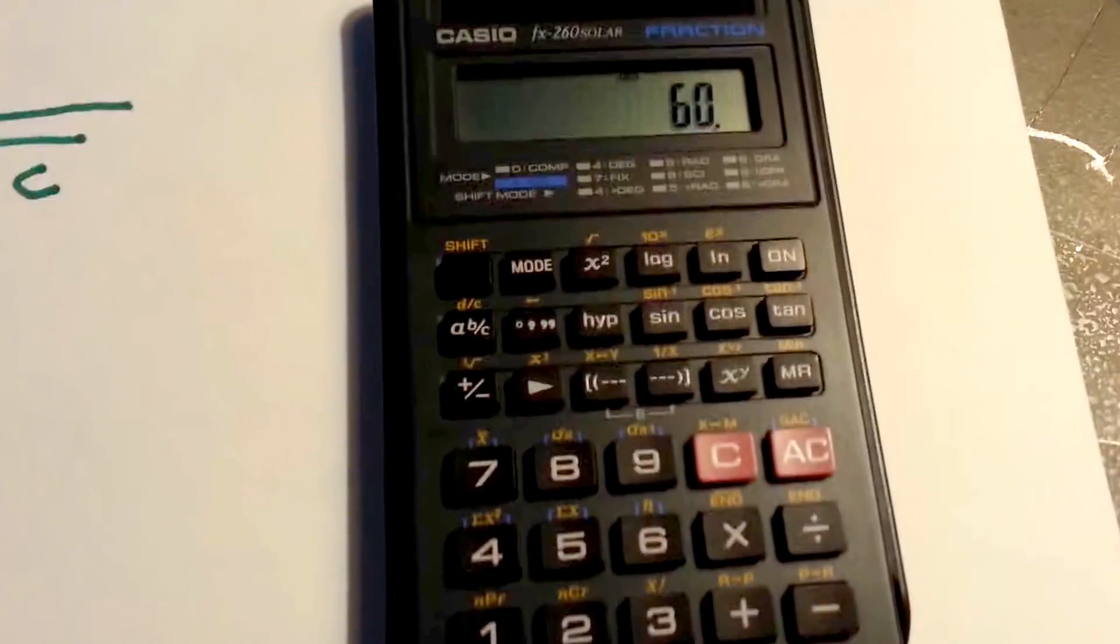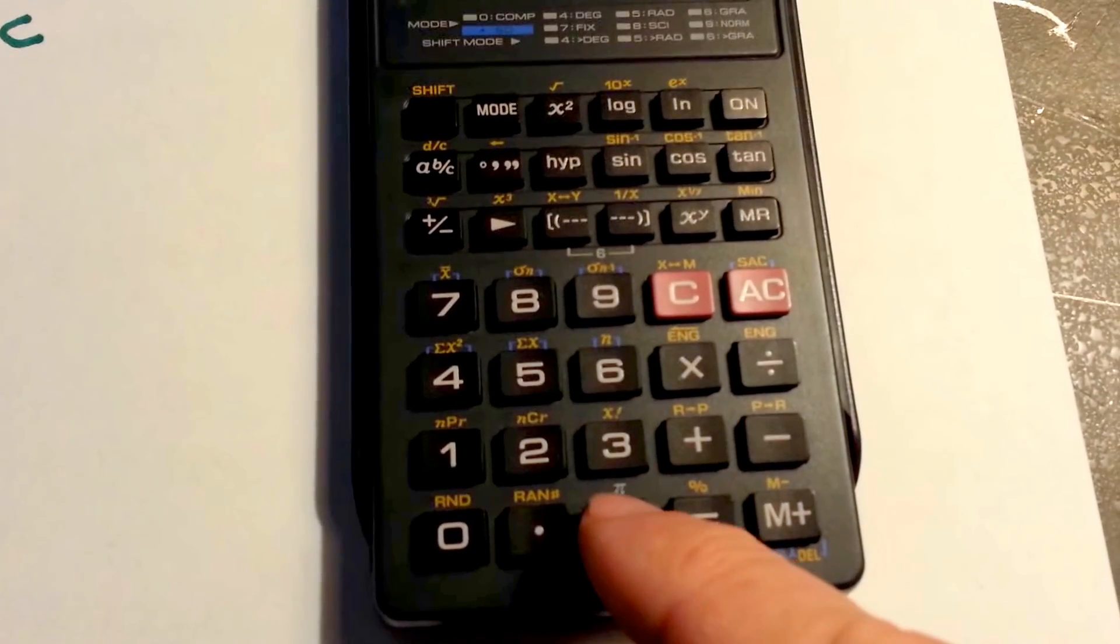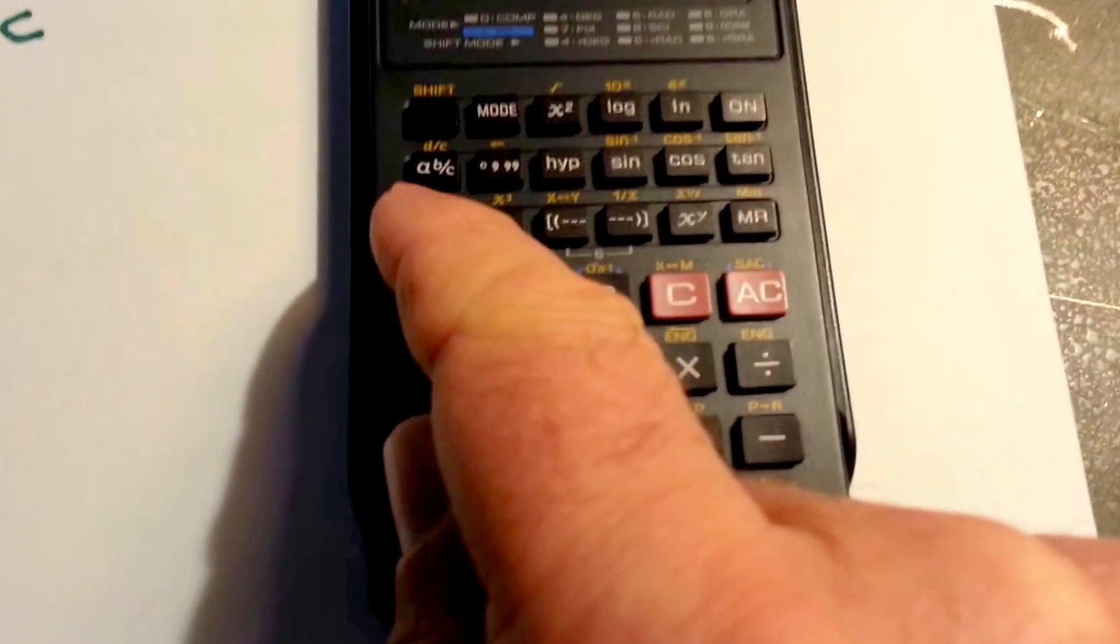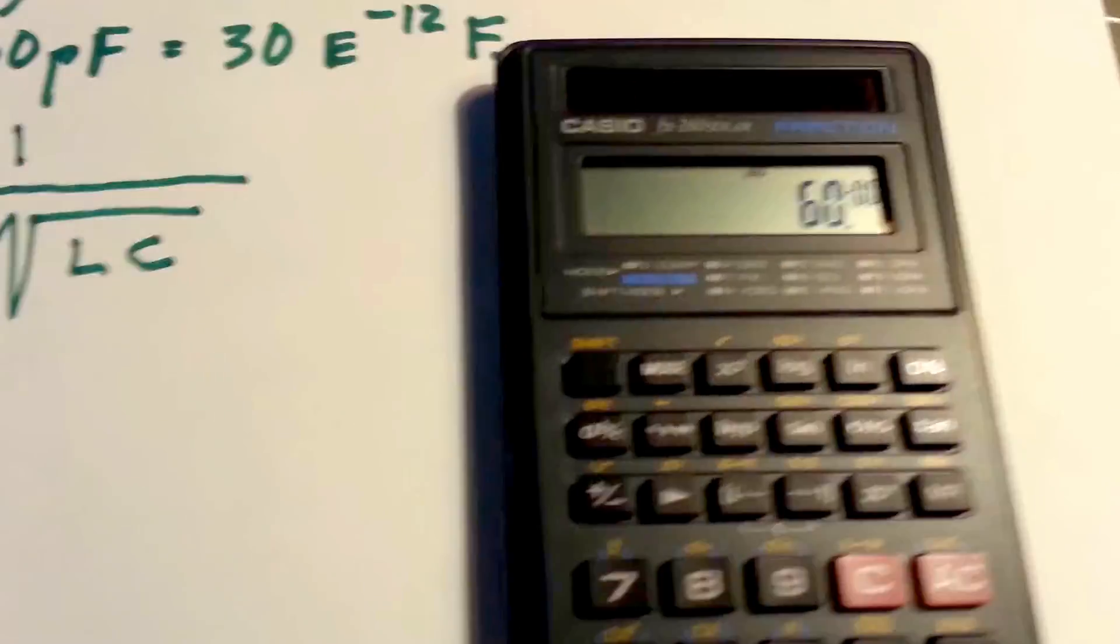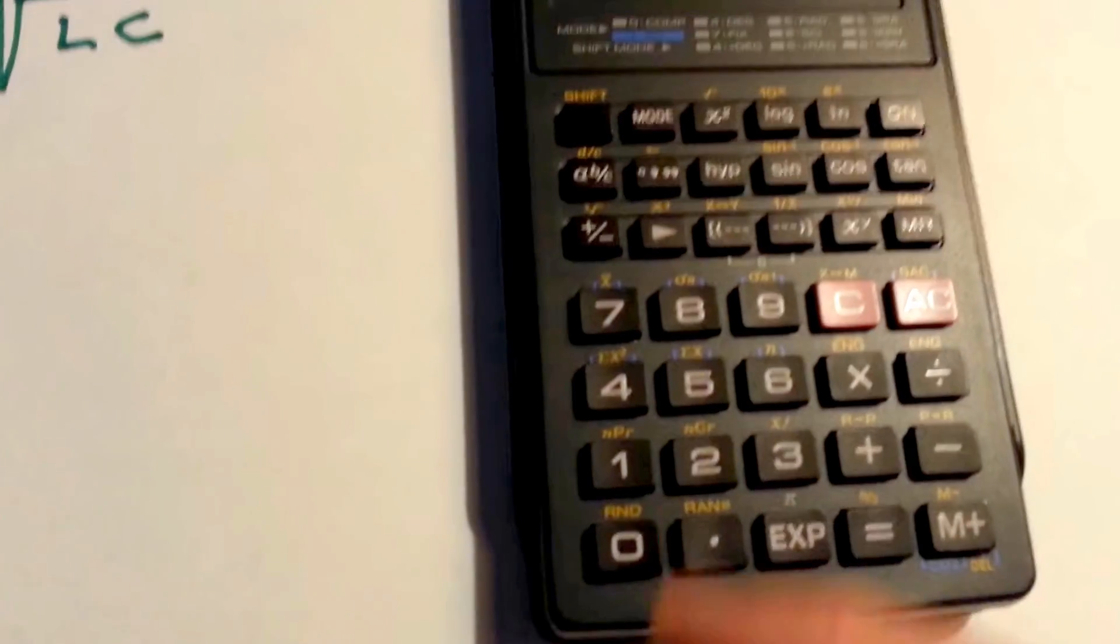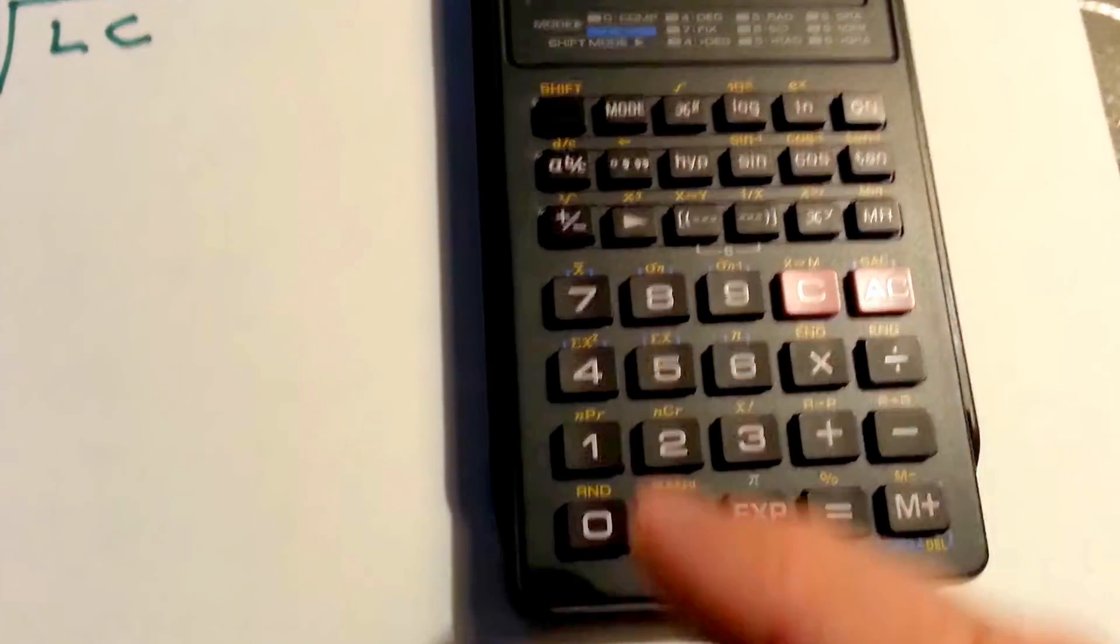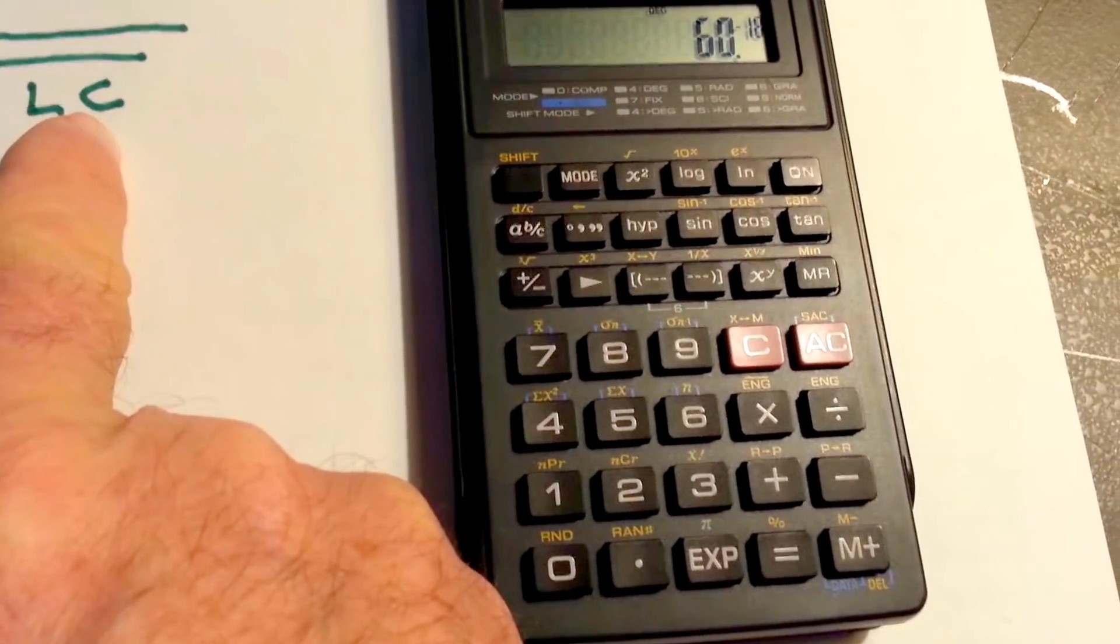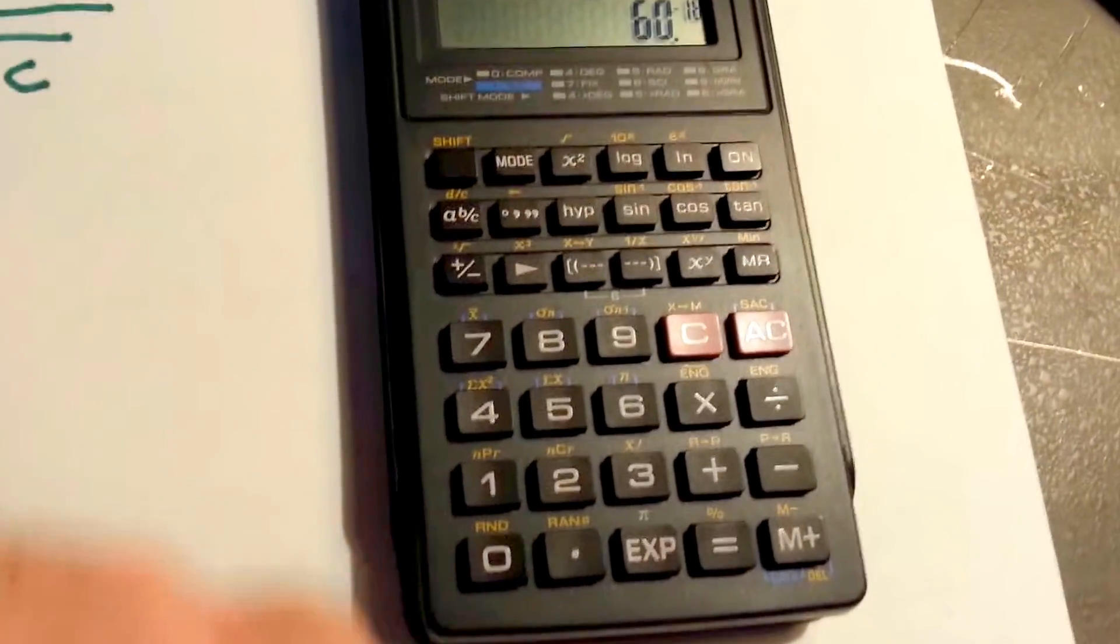So let's put the numbers in here. 60, and then press exp right here. Exp, and then change the sign because it's negative. That's the sign change. Your calculator might be a little different. And it's 18. We've got that in there. That's multiplied.